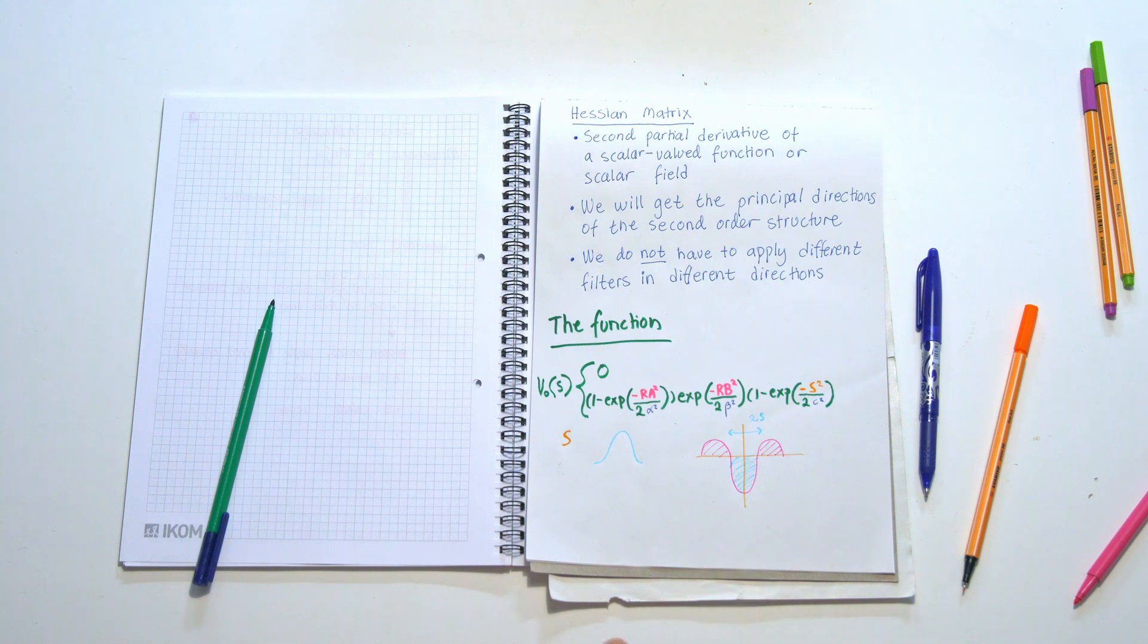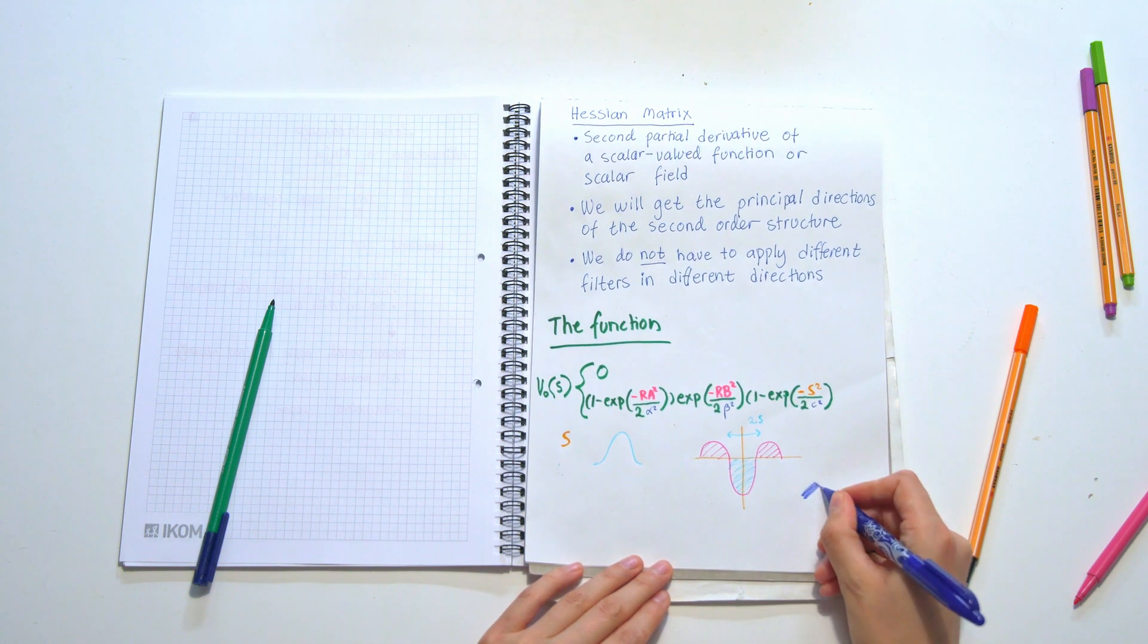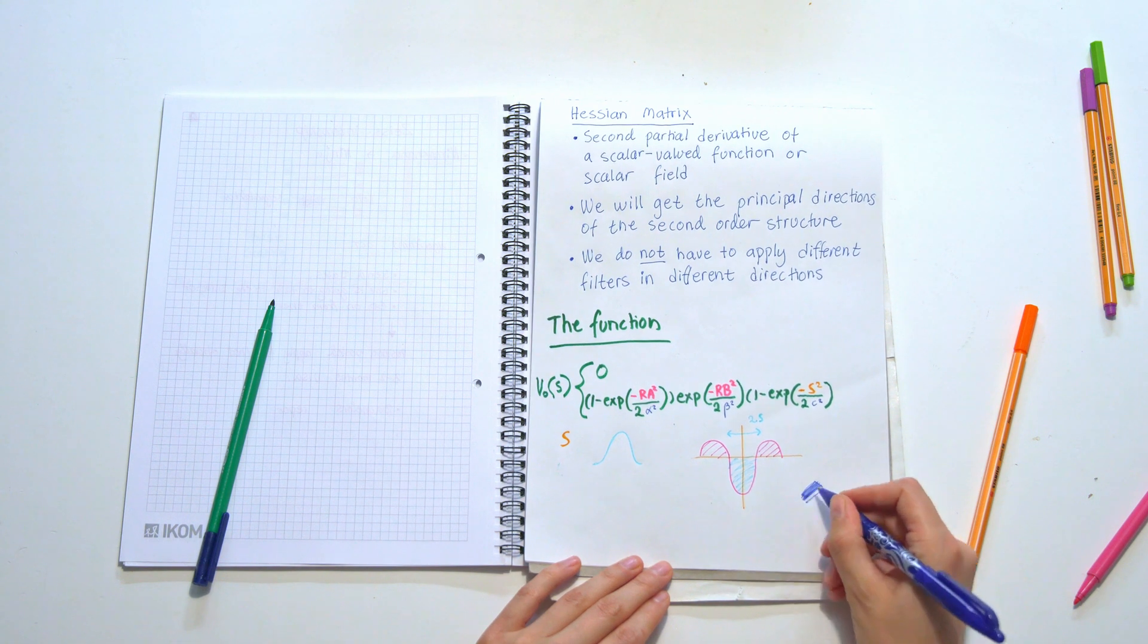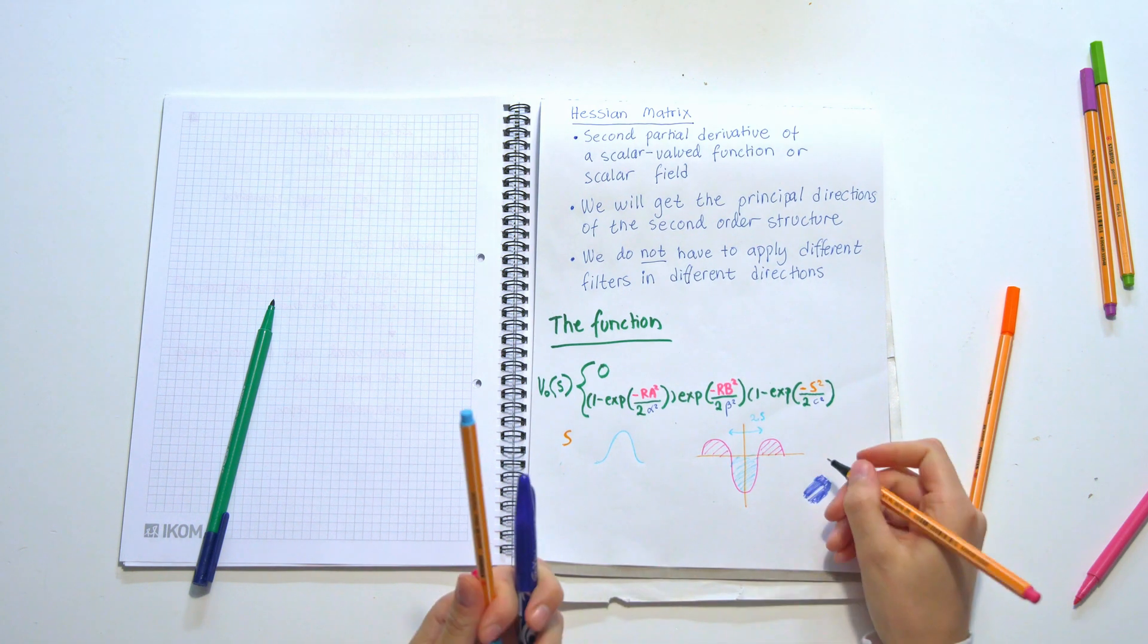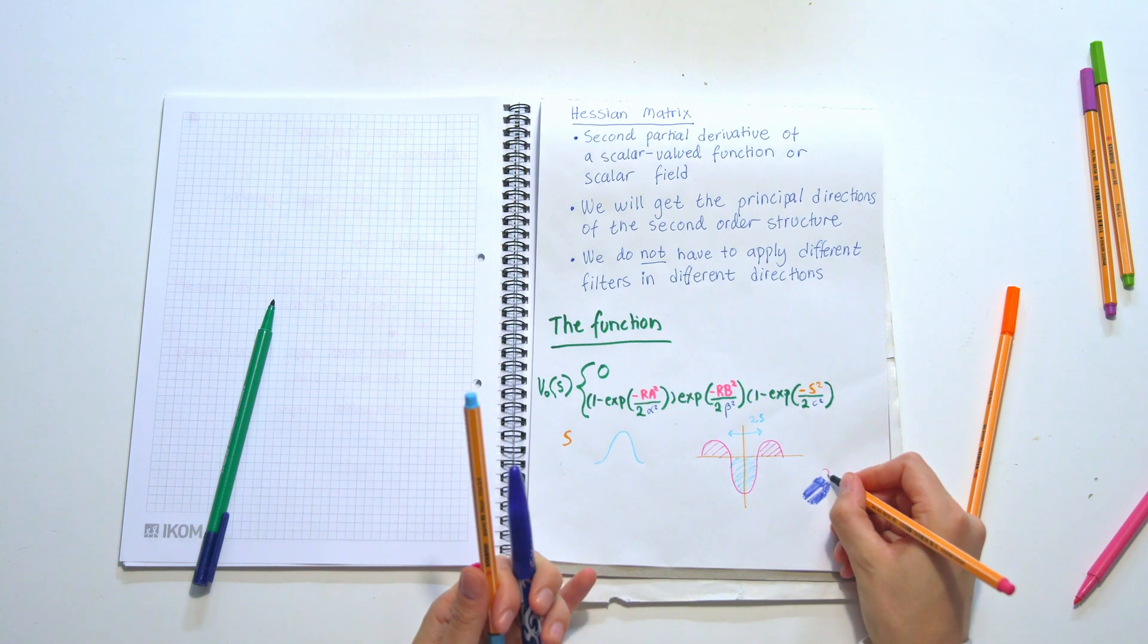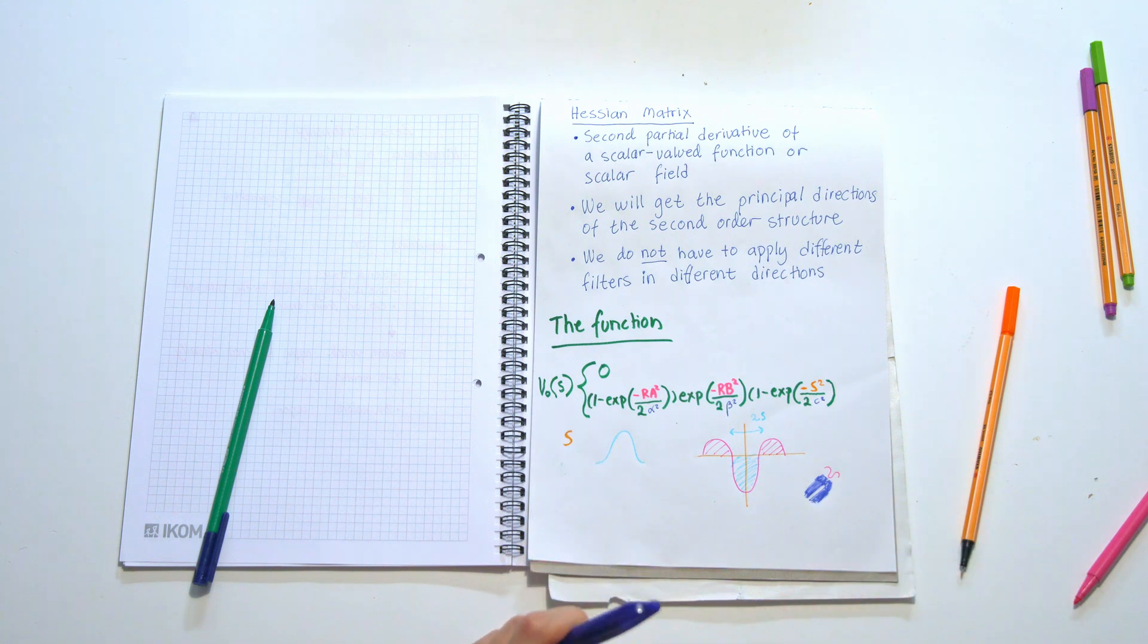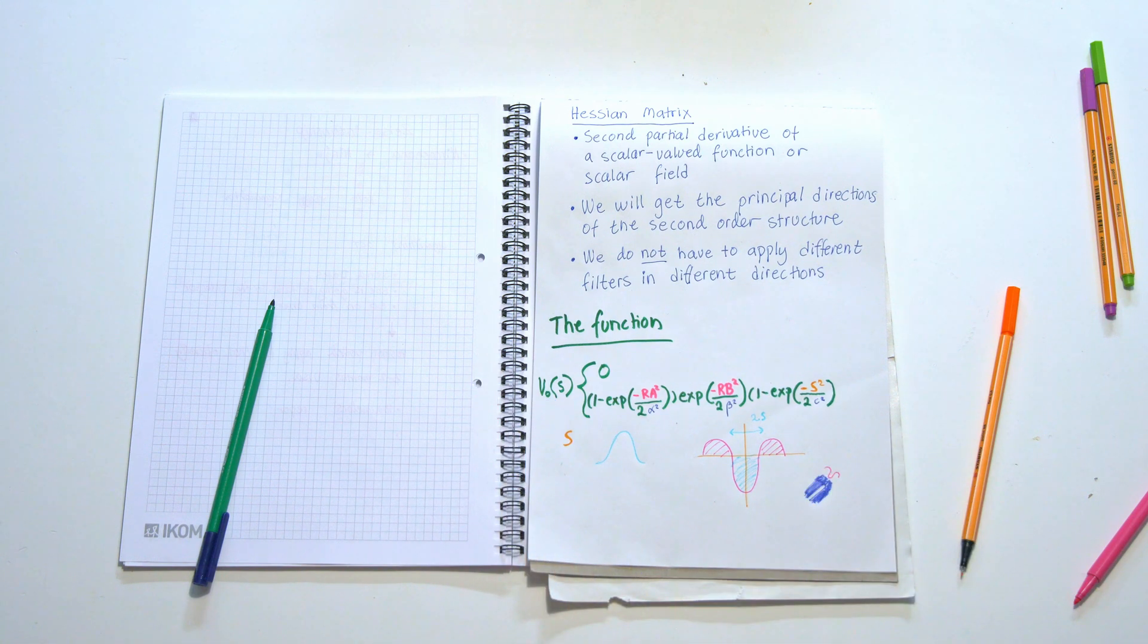It shows the inside and outside contrast. For example in an MRI image we will have a dark background and then our vessels will be white. Depending on how big this S is that we have defined, we will be able to go through with this kernel and see where it is matching in the image, where there is this contrast of inside and outside.